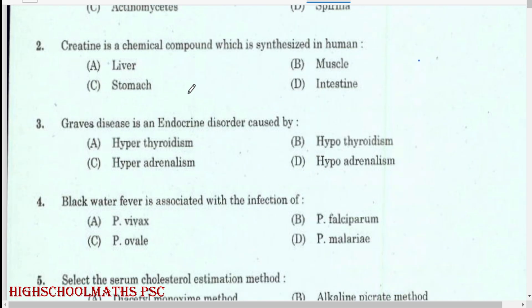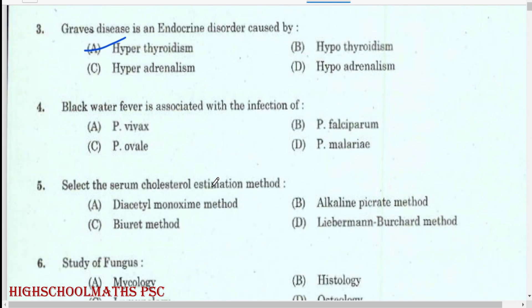Creatine is a chemical compound which is synthesized in the human liver. Graves disease is an endocrine disorder caused by hyperthyroidism. Black water fever is associated with the infection of Plasmodium falciparum.